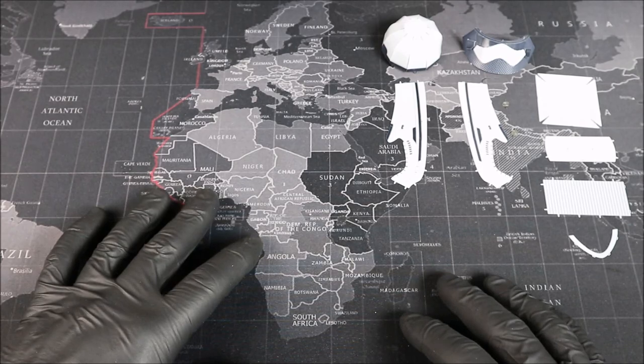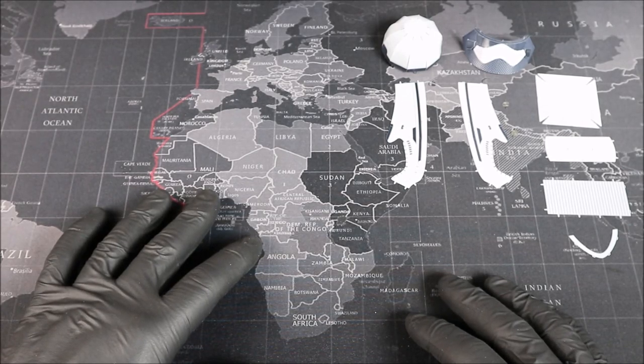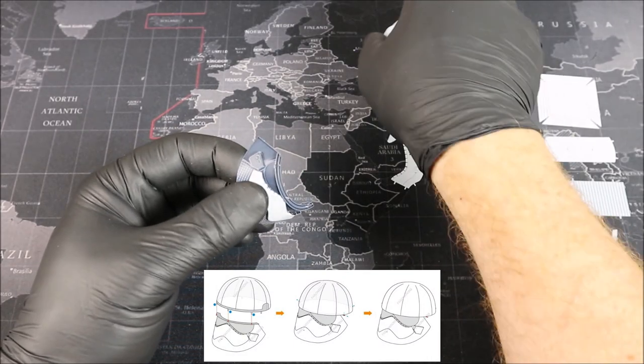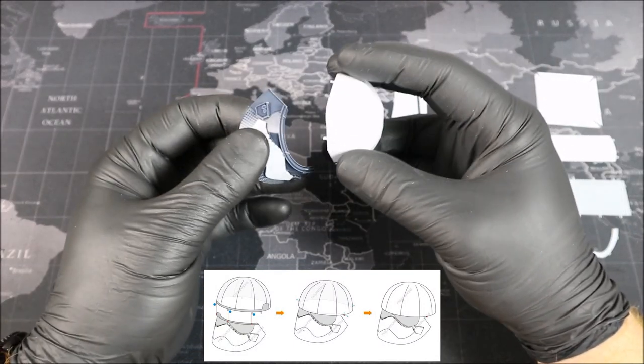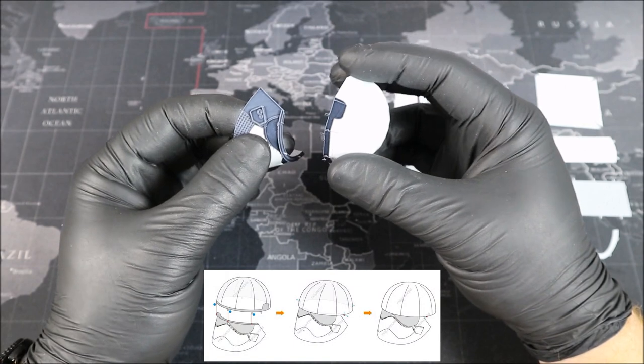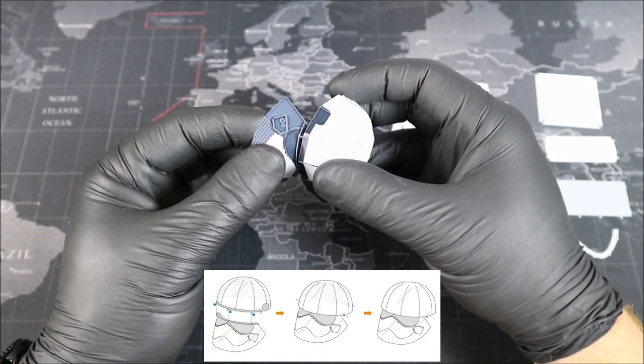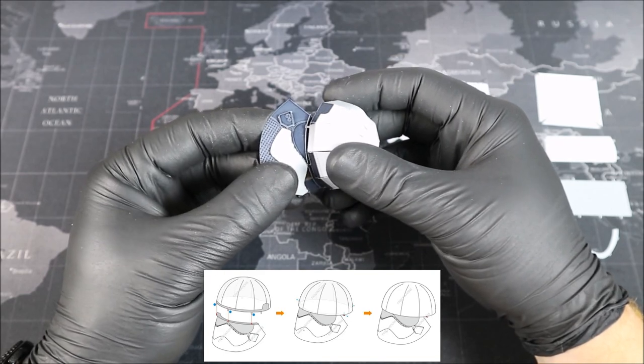And just like that we have all of our parts needed to complete our build. Now the first thing we're going to do is connect our dome on to our face plate, which I think is going to be pretty straightforward. We just need to make sure that we get everything lined up properly. That means these little front tabs here.